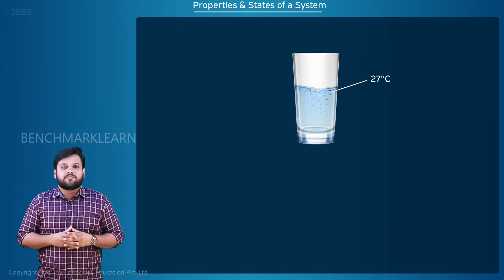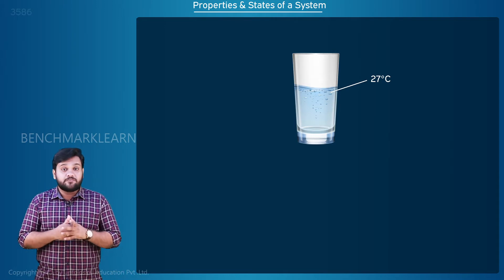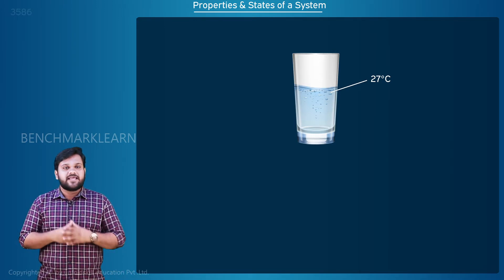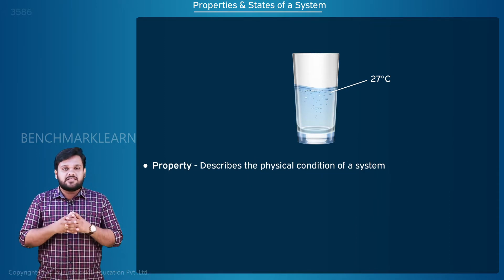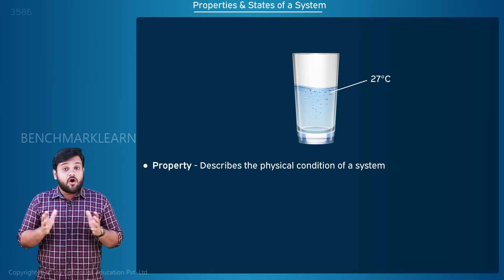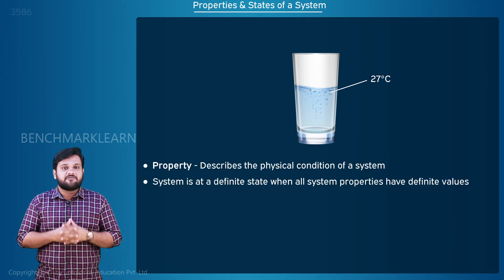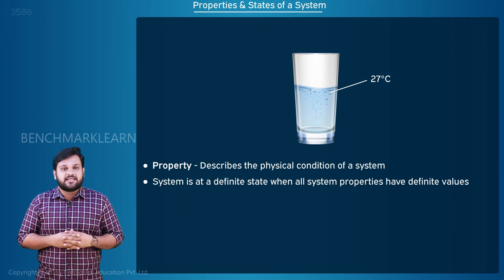So each system has several properties associated with its volume, pressure, temperature, mass, etc. Property of a system is a quantity which describes the physical condition of a system. When all the properties of a system have definite values, the system is said to exist at a definite state.